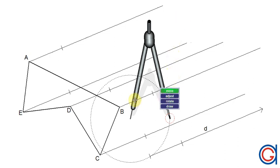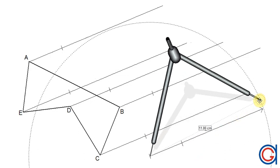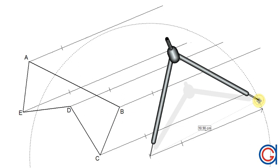So the next step is setting our compass to the given length of the vector d and transporting it onto each of the parallel construction lines.